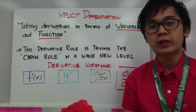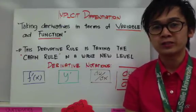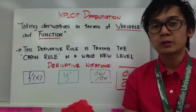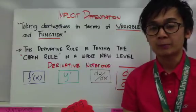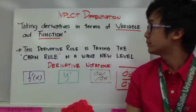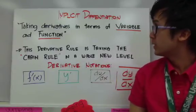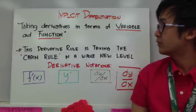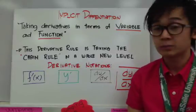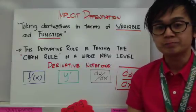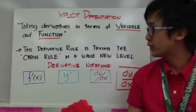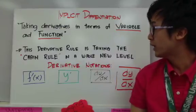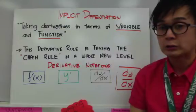Hi. Today we're going to be working on implicit differentiation. It is the new rule that we're going to be working on in AP Calculus. By definition, implicit differentiation is taking derivatives in terms of variable and function. Also, this derivative rule is taking the chain rule to a whole new level.